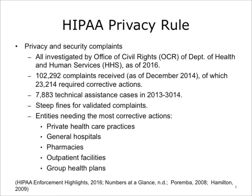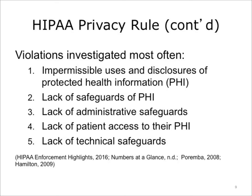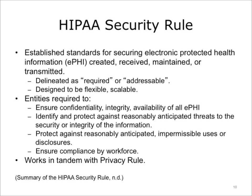The most common types of covered entities required to take corrective action to achieve voluntary compliance have been investigated from the compliance date to the present. The compliance issues investigated most, compiled cumulatively in order of frequency, are: impermissible uses and disclosures of protected health information; lack of safeguards of protected health information; lack of patient access to their protected health information; uses or disclosures of more than the minimum necessary protected health information; and complaints to the covered entity.